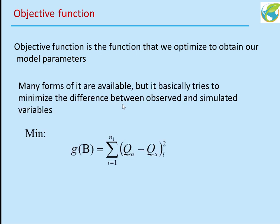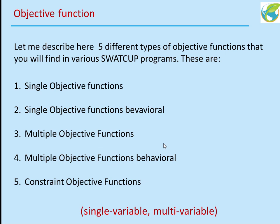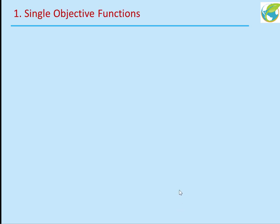There are eleven types of such functions in SWATCOP, and most of them are designed to minimize the difference between an observation and a simulated variable. There are five different types I would like to discuss: single objective functions, single objective functions which are behavioral, multiple objective functions, multiple objective functions which are behavioral, and a constrained objective function. All of these could be applied to a single variable such as discharge, or to multiple variables such as discharge, sediment, and nitrate.